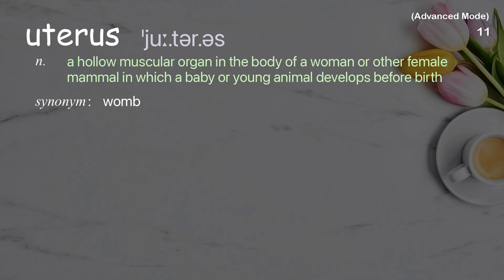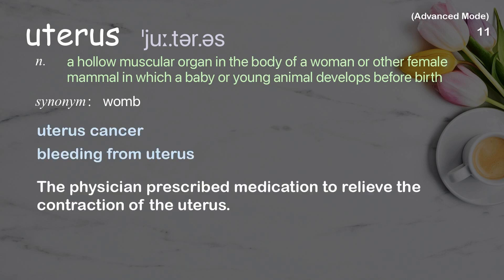Uterus: a hollow muscular organ in the body of a woman or other female mammal in which a baby or young animal develops before birth. Examples: uterus, bleeding from uterus. The physician prescribed medication to relieve the contraction of the uterus.